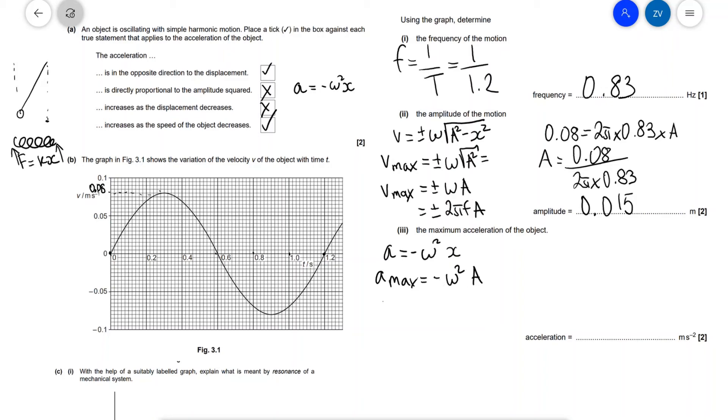Now we have the amplitude and we know we can work out omega really easily, so we can work out our maximum acceleration. Our maximum acceleration will be equal to minus 2 pi f squared times a. Don't forget the square—this is pretty crucial—which means that a max will be equal to minus 2 pi times 0.83 which is our frequency, I'm going to square everything, I'm going to times it by 0.015.